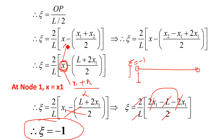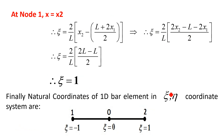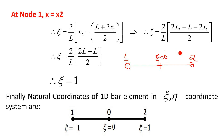So in summary: for a two-noded 1D bar element in the ξη coordinate system, the origin is at the center where ξ = 0, the right node (node 2) has ξ = +1, and the left node (node 1) has ξ = −1. Right of the origin is positive ξ and left of the origin is negative ξ. For a three-noded bar element, the third node is at the center with ξ = 0.